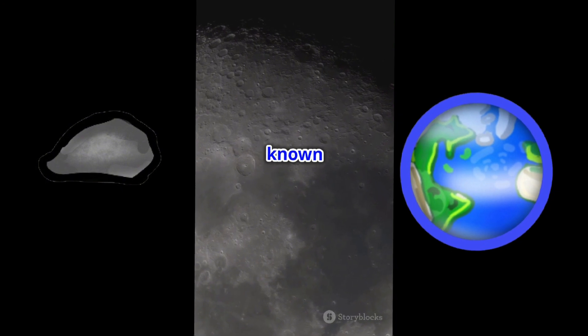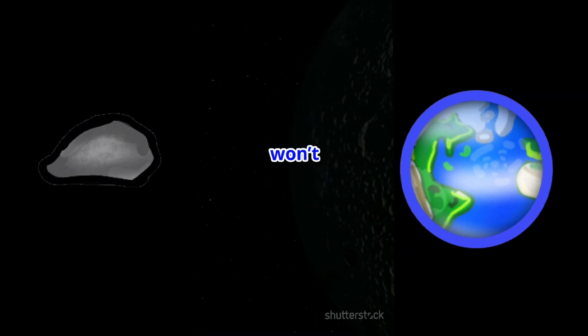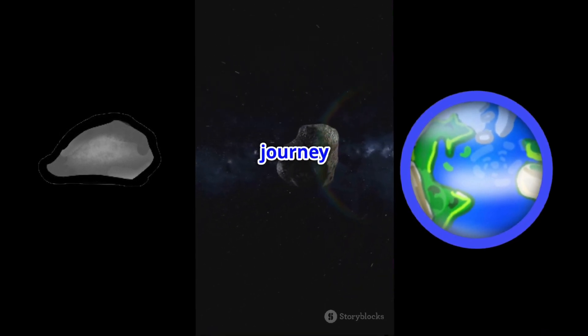2024 PT-5 is what's known as a temporary captured object. Unlike our permanent moon, it won't stick around forever. It's like a cosmic visitor, just passing through before it continues its journey around the sun.